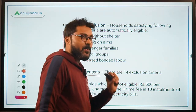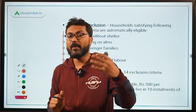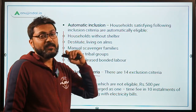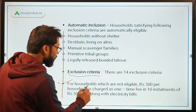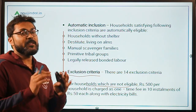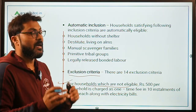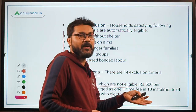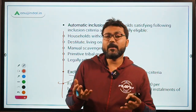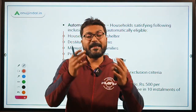The government claims 100% electrification through PM Saubhagya Yojana. But what about those who are not eligible? For households which are not eligible, Rs. 500 per household will be charged as a one-time fee in 10 installments of Rs. 50 each, for those who are not able to pay for the electricity connection upfront.